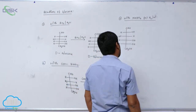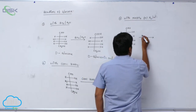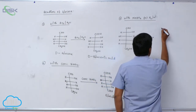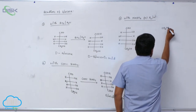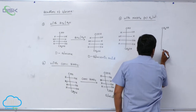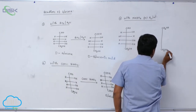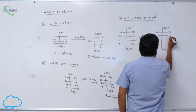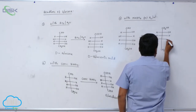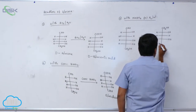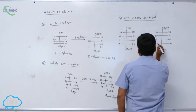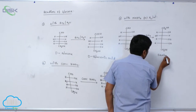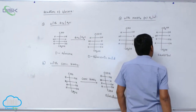When sodium borohydride is added to D-glucose, the aldehyde is reduced to CH2OH, forming an alcohol. The product has OH groups at the respective carbons and is known as sorbitol.